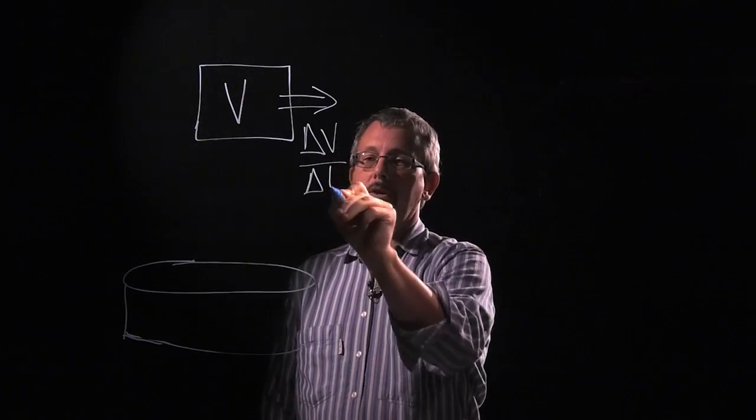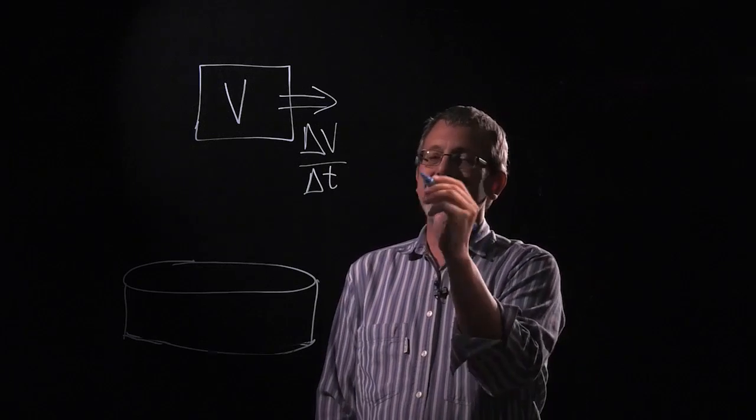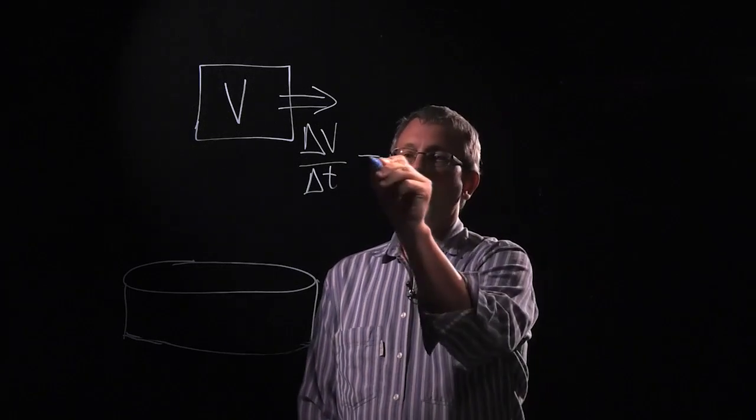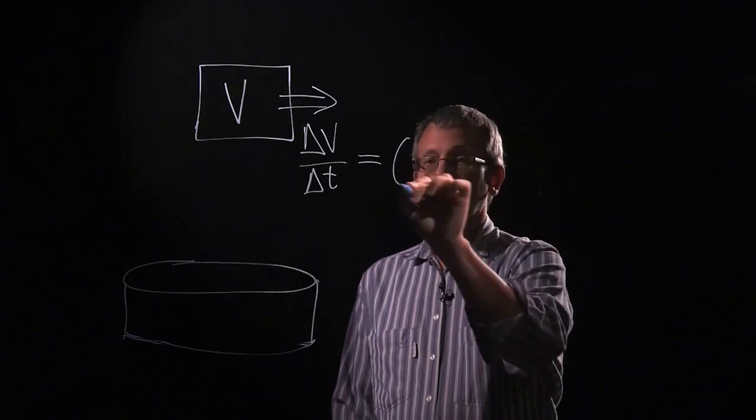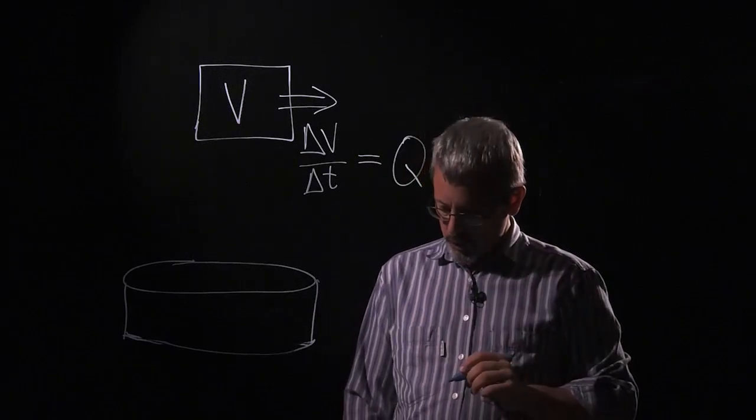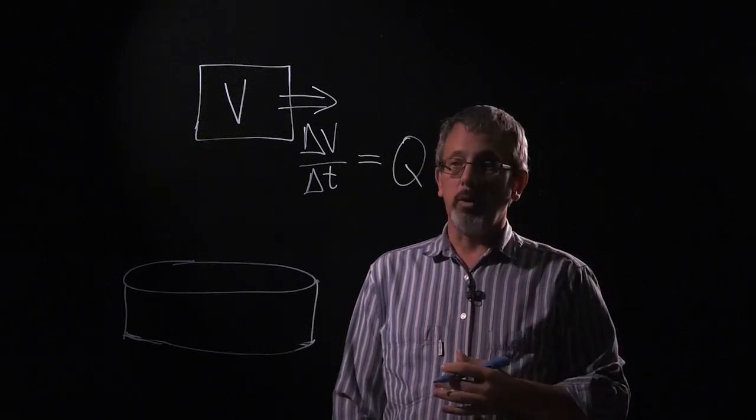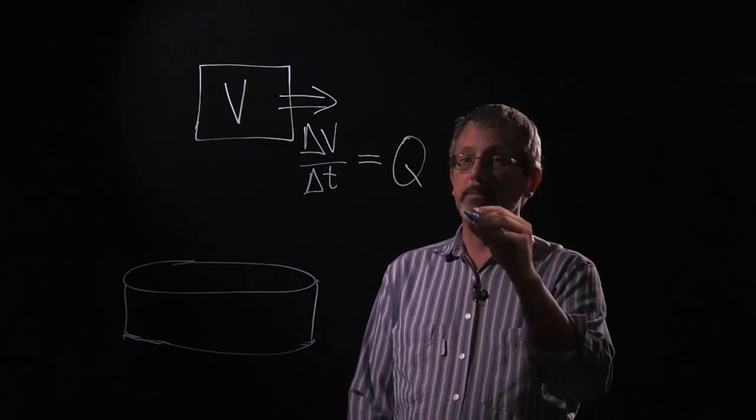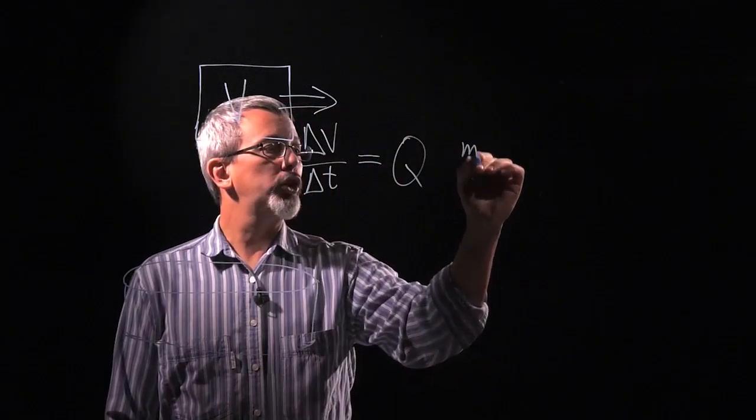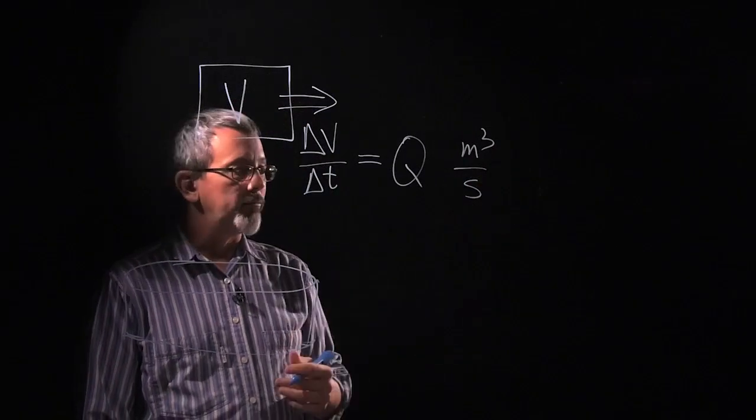Well if we take that amount of volume and we divide it by the amount of time, that is the definition of what we call flow. And the letter we typically use for flow is the letter Q. And usually the units for something like flow are going to be in units of volume over time. An example might be something like meters cubed per second.